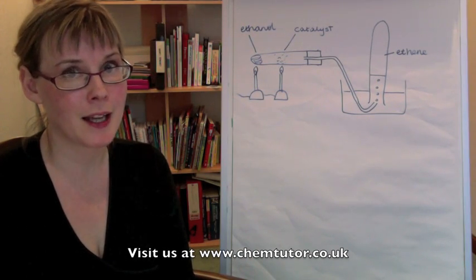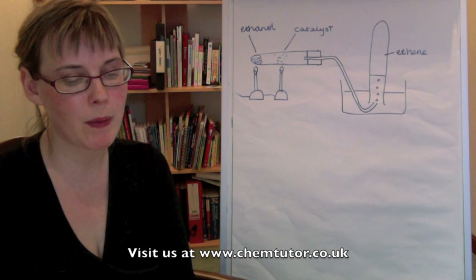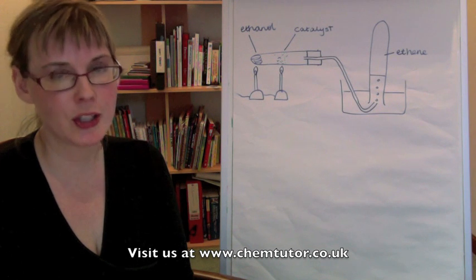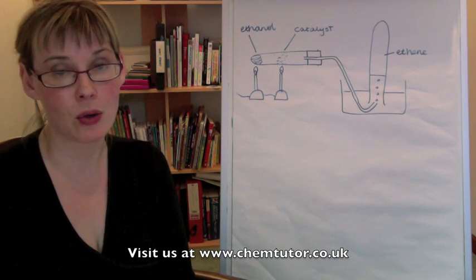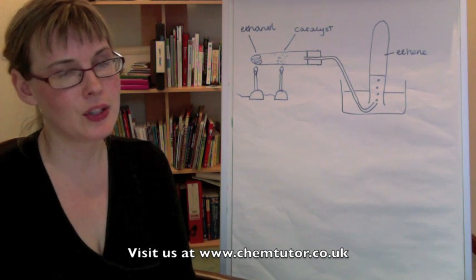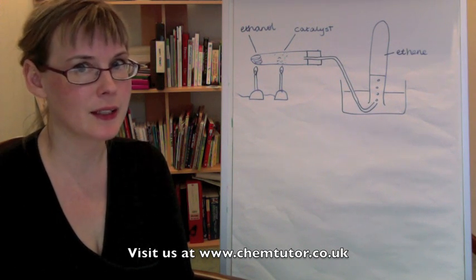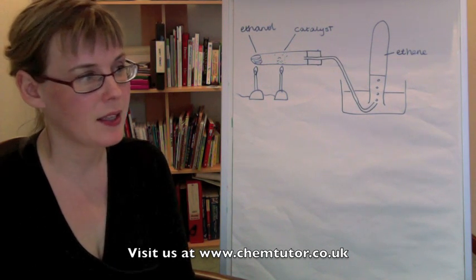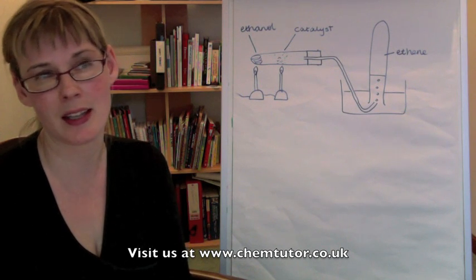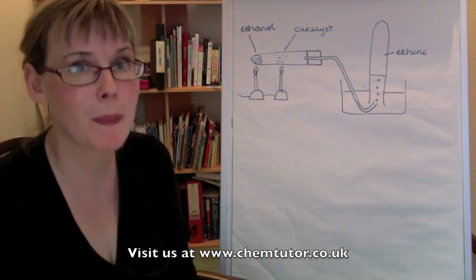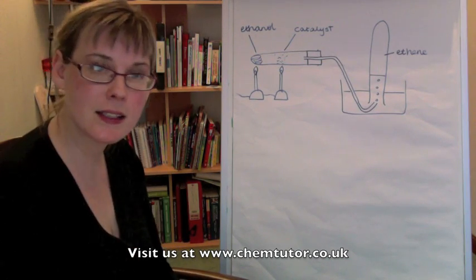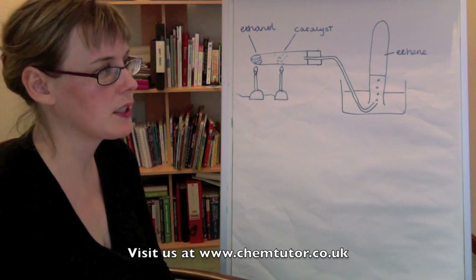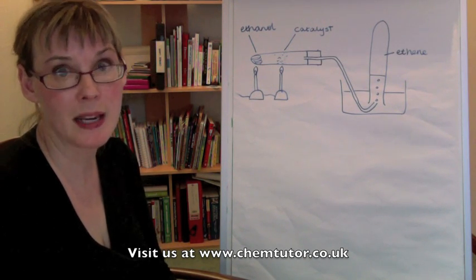We're also expected at Higher to know about the reverse reaction, which is where you start off with your alcohol and dehydrate it to obtain the corresponding alkene. This is of use especially in things like the manufacture of plastics, as alkenes, especially ethylene, would be the starting material for many plastics.